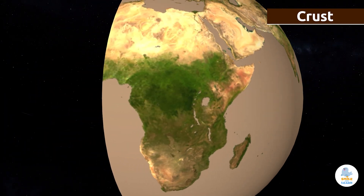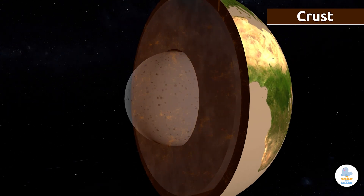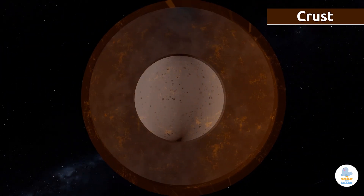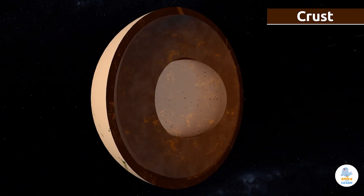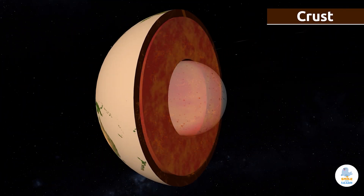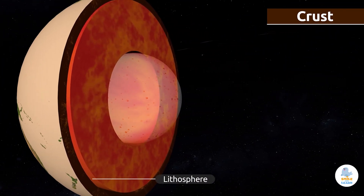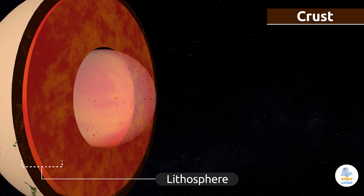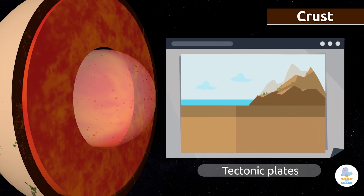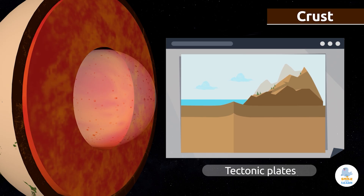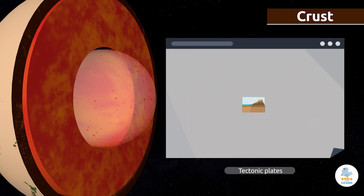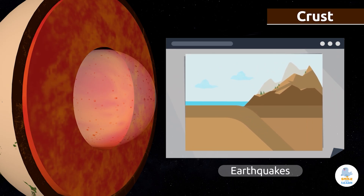The Geosphere is broken up into several tectonic plates. These make up the crust and also the mantle, and they are found in a layer called the lithosphere. Tectonic plates are constantly moving, molding the crust. Their movement causes earthquakes.